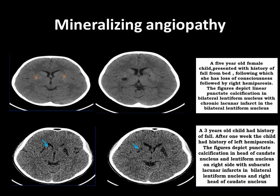Here is a case of a five-year-old female child who presented with a history of fall from bed, following which she had a loss of consciousness followed by right hemiparesis. The first set of figures depict linear punctate calcifications in bilateral lentiform nucleus with chronic lacunar infarcts in bilateral lentiform nucleus.